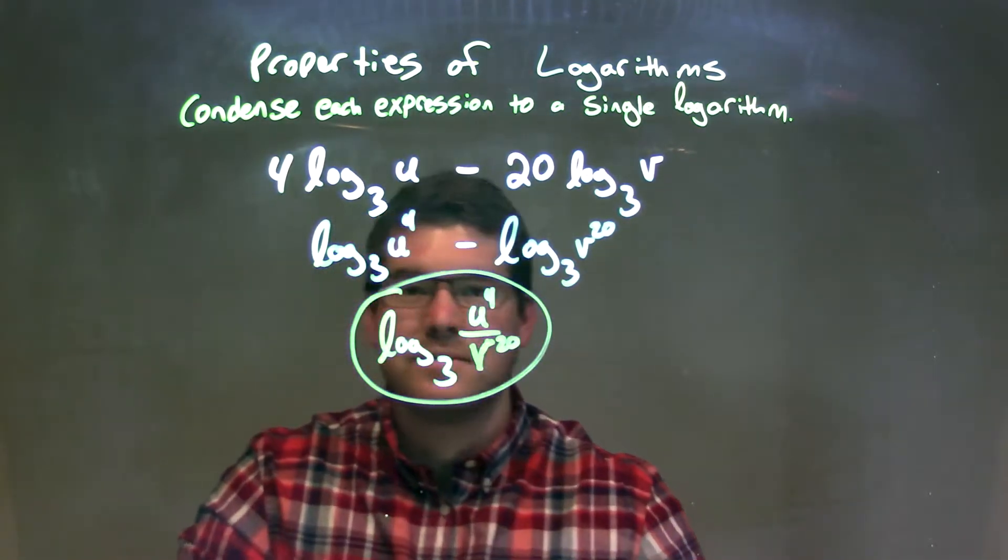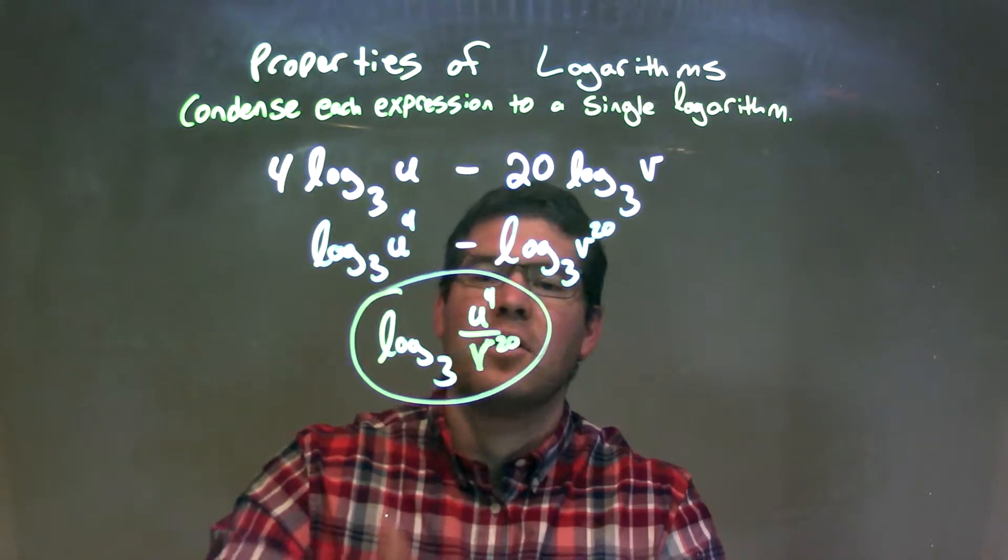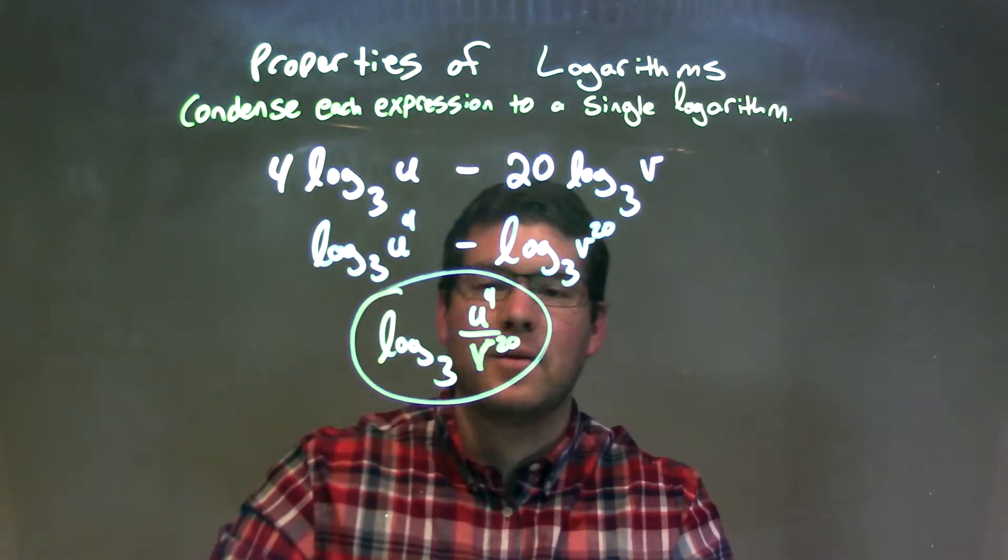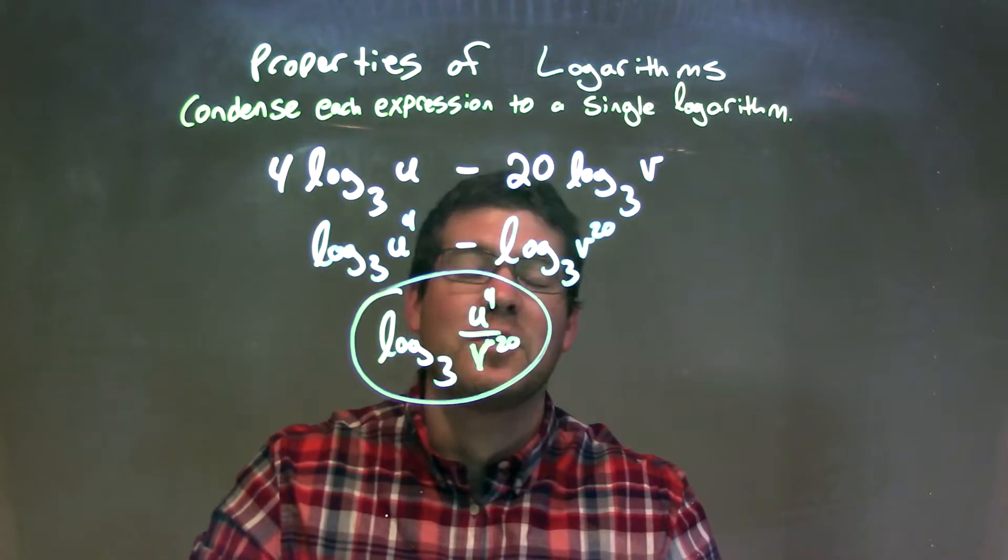And that's it. There's no more that we can condense. And so our final answer is log base 3 of u to the 4th divided by v to the 20th power.